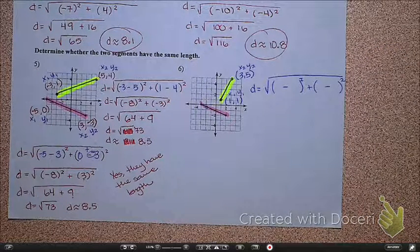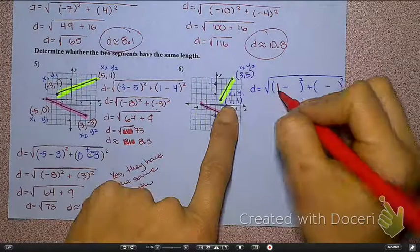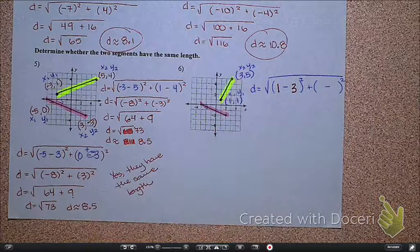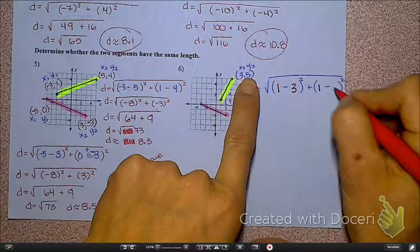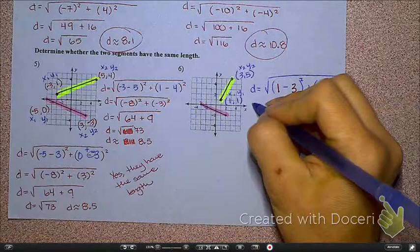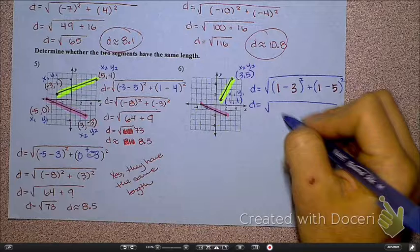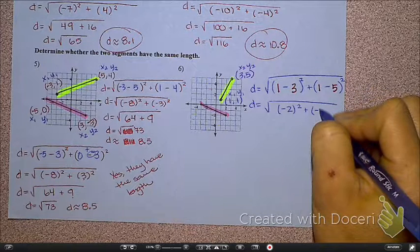Now, what I'm going to do is fill in the x's first, so 1 and 3 go in the first set of parentheses. Then I'm going to fill in the y's. 1 and 5 go in the second set. Now I'm going to simplify this. So, here's what I get. I get negative 2, and then I get negative 4.